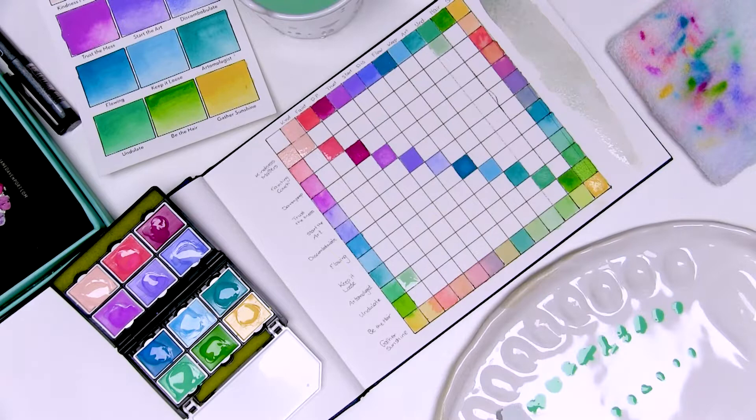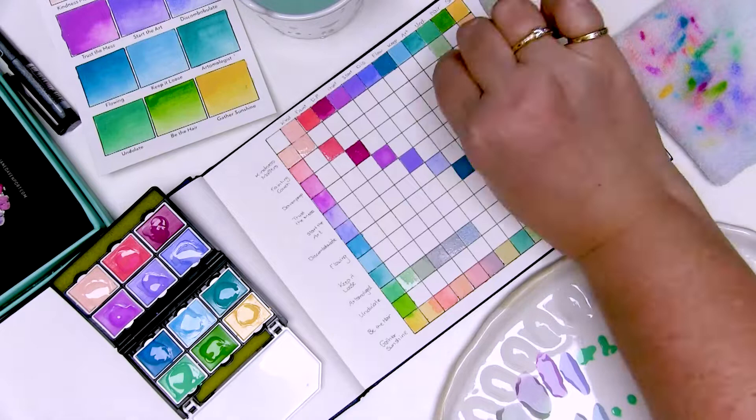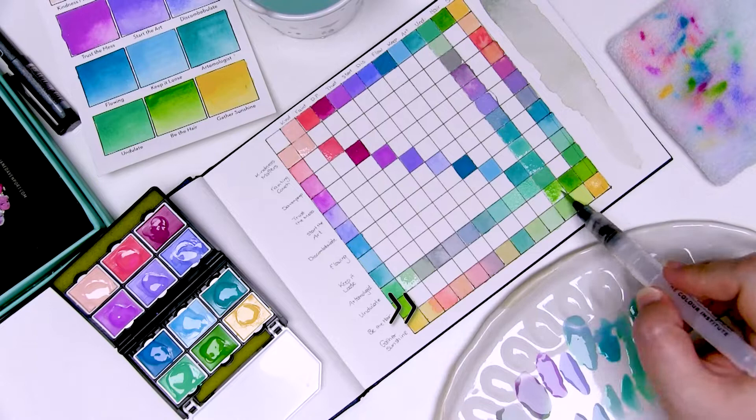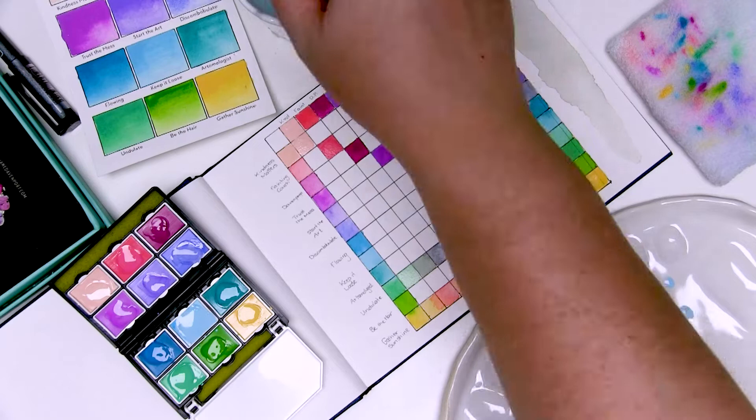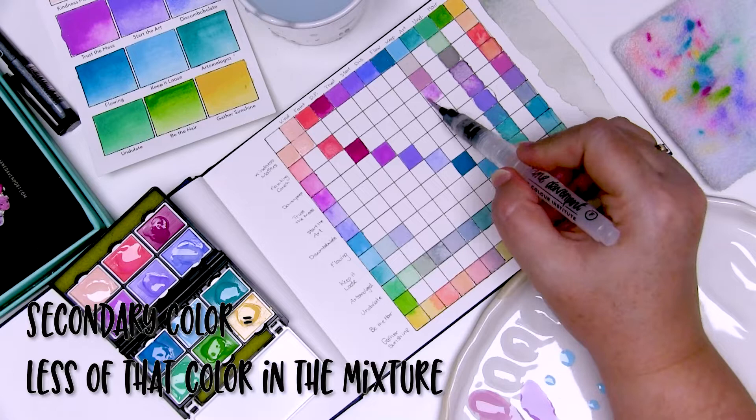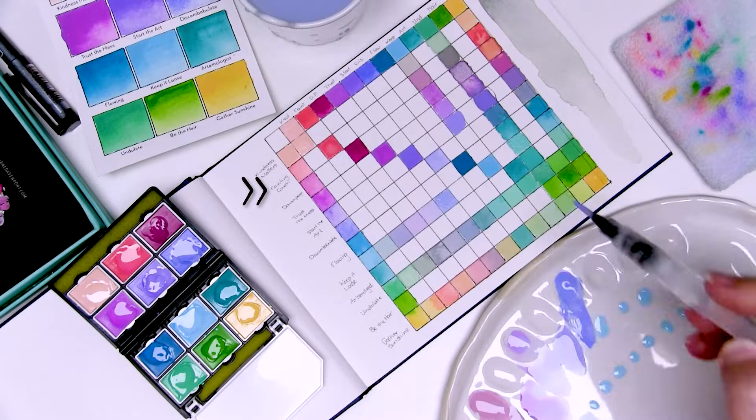So for example, when you've mixed Kindness Matters and Trust the Mess, I've made sure Kindness Matters is the dominant color in that color combination. If you move further down the page, for example to the yellow section where it's got Gather Sunshine, even though Kindness Matters and Gather Sunshine are mixed together, in this row I've made sure that Gather Sunshine is the most dominant color and the Kindness Matters is the secondary color. So basically when I say dominant color, it means there's more of that color in the mixture. When I say secondary color, it means there's less of that color in the mixture. So if I'm going along, for example, the row that says Fainting Couch, if I go along to where Fainting Couch meets with Trust the Mess, Fainting Couch on that row is the dominant color.